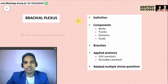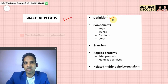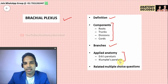Hello everyone, welcome to this session on the brachial plexus. This is one of the most important topics to be studied in upper limbs. I will be covering this topic under the following headings: the definition of brachial plexus, what are the components, various branches, two important applied anatomy topics — Erb's paralysis and Klumpke's paralysis — and lastly some multiple choice questions related to this topic.